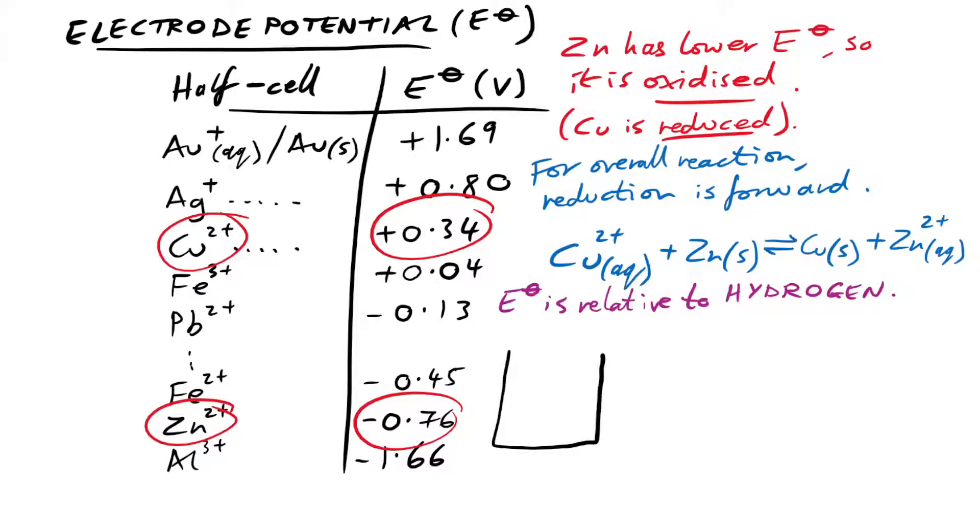Where do we get these numbers from though? Well, these are all relative to hydrogen. If you have hydrogen pumped in to a solution and our electrode is a platinum electrode, so it's inert like we saw earlier, if we have in the other half cell the metal that we're looking at with a solution of its ions, then we can see whether it has a positive electrode potential or negative electrode potential compared to this standard hydrogen one.